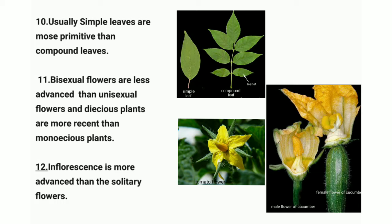Point ten: usually simple leaves are more primitive than compound leaves. Simple leaves are broad — for example, the guava leaf. For compound leaves, we can take the examples of neem and rose plant leaves.